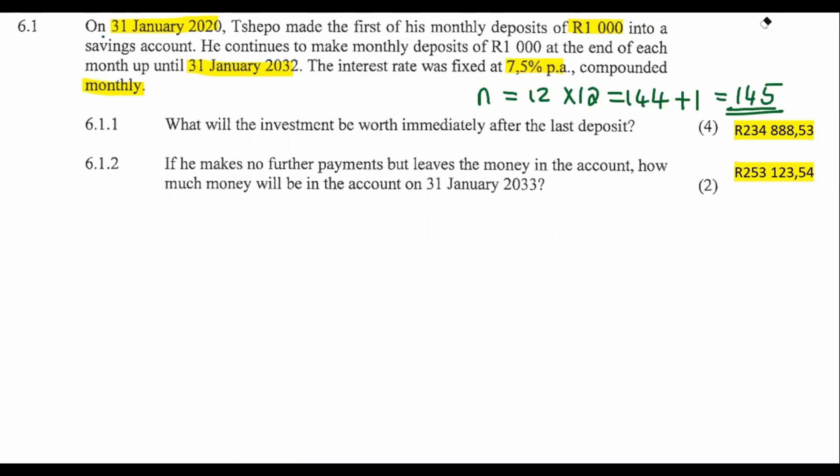Okay. So here's number 6.1.2. If he makes no further payments, but he leaves the money in the account, how much money will be in the account on 31 January 2033? So guys, this person has accumulated a nice amount of money. And then he decides, you know what? I don't really need to use the money. I'm just going to leave it in the bank account. I'm not going to make any more payments anymore. I'm not going to pay a thousand Rand anymore, but I'm just going to leave the money in the bank. Well, if you leave the money in the bank like that, it's going to start earning interest just using the normal grade 11 compound formula.